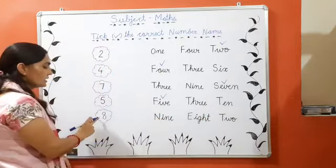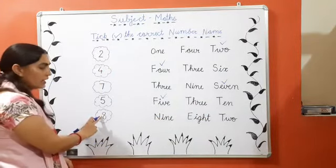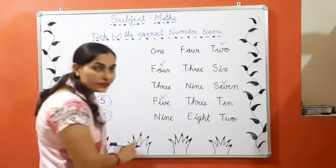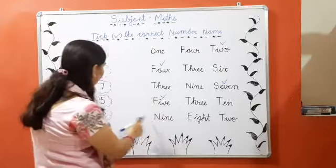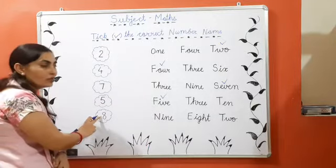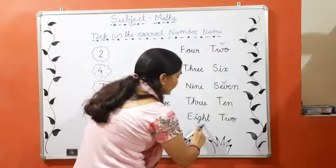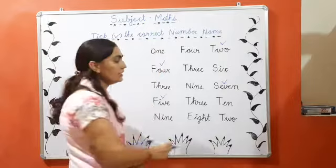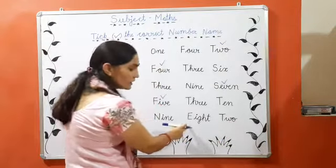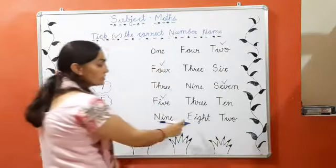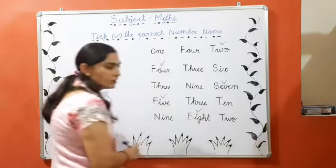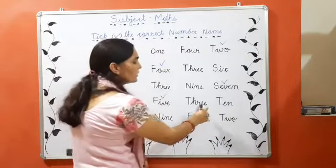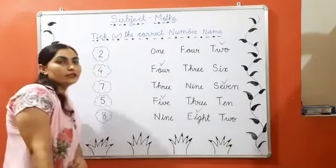Next is eight. Now speak after me. N-I-N-E, nine. This is nine's spelling, but we need eight's spelling. E-I-G-H-T, eight. T-W-O, two. So we needed eight's spelling, so we ticked eight.